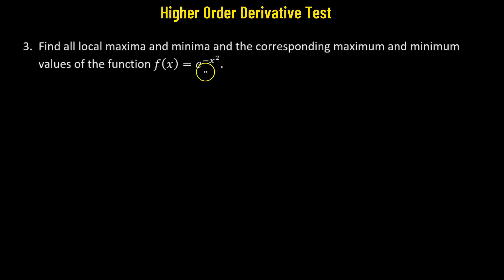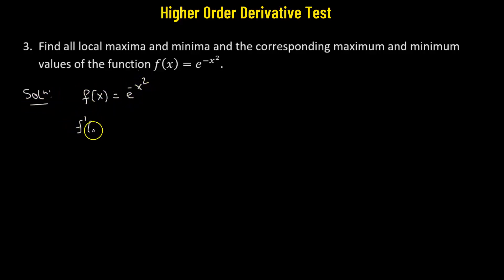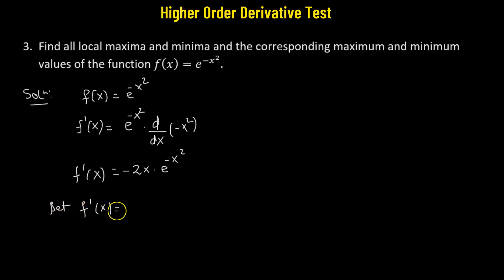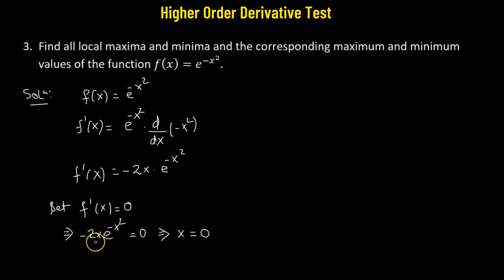Problem 3: f(x) = e^(−x²). Taking the derivative using the chain rule: f'(x) = e^(−x²) times the derivative of (−x²), which is negative 2x. So f'(x) = negative 2x · e^(−x²). Setting f'(x) = 0: negative 2x · e^(−x²) = 0. Since the exponential cannot be zero, we get x = 0 as our only critical point.